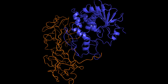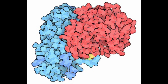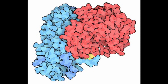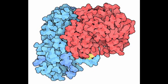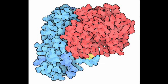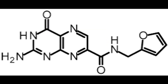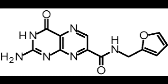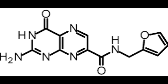Ricin is a protein that is extracted from the seeds of the castor oil plant, and it works by inhibiting protein synthesis in cells, which leads to cell death. Ricin is classified as a type 2 ribosome-inactivating protein, which means that it targets the ribosome — the cellular machinery responsible for producing proteins.